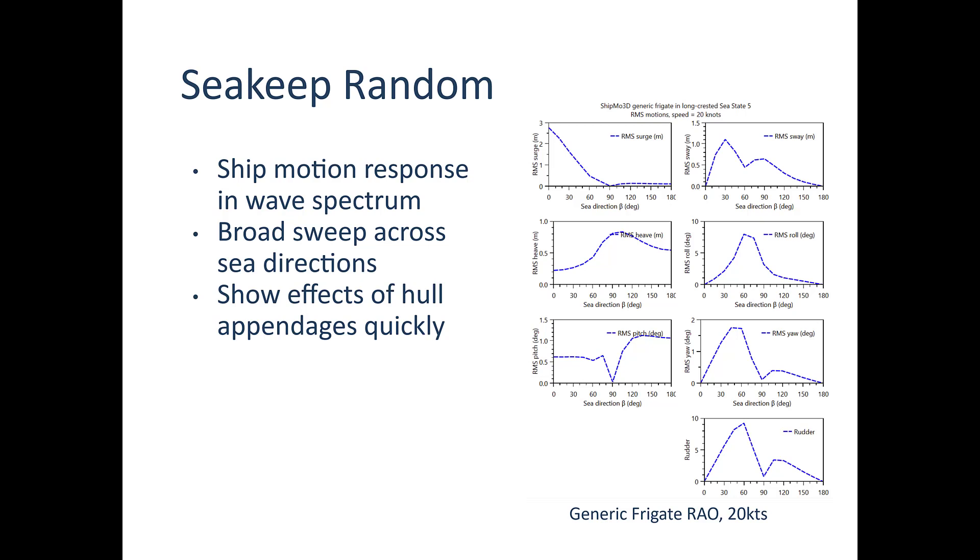But SeakeepRandom is also helpful because it resolves the motion characteristics of the vessel across a wide range of sea directions. So sea directions meaning where is the sea coming from. So this is the response characteristics of the generic frigate in a long crested sea, sea state 5, with RMS motions and forward speed at 20 knots.